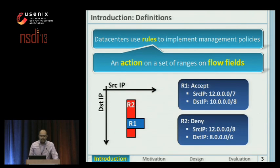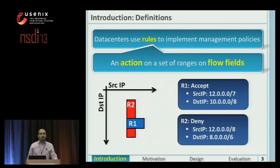Here, R2 has deny action and has lower priority. Note that real-world rules are more complex and have more dimensions.